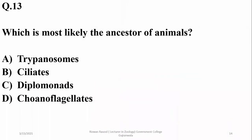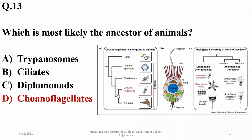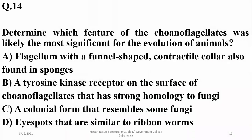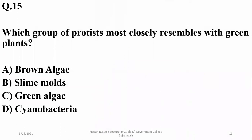The organism most likely to be the ancestor of animals is the choanoflagellate, due to the presence of collar cells — they are considered ancestors of sponges. The feature of the choanoflagellate most significant for the evolution of animals was its flagellum with a funnel-shaped contractile collar cell, also found in sponges.